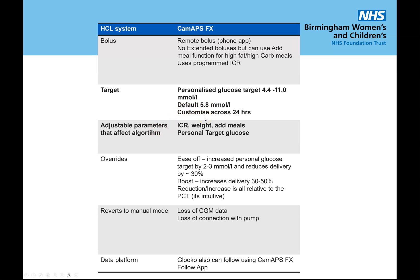The default target is set at 5.8 but can be changed as required. You need to program the carb ratios and keep the weight up to date; the add meal function is useful for hypo treatments and high fat meals. The ease-off override increases the glucose target by roughly 2 to 3 mmol/L and reduces the aggressiveness of the algorithm by about 30%, very useful for activity and for people drinking alcohol. The boost function increases the aggressiveness of the algorithm by 30 to 50%, useful after prolonged exercise suspensions or during periods of ill health, offering opportunities for individualization and in-the-moment decisions.